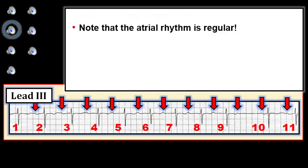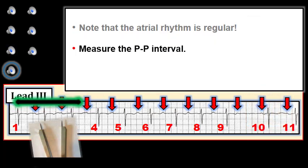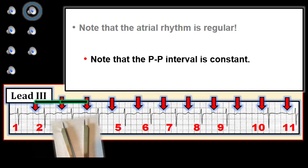Note that the P-to-P interval from one P wave to the next in this tracing is constant throughout. When there is time to do so, using calipers facilitates interpretation of any complex rhythm strip. There is no better or faster way to determine relationships between P waves and the QRS, and no better or faster way to determine if the rhythm is regular. Measure the P-to-P interval — ideally doing so with calipers. The P-to-P interval is constant for all beats on this tracing, which confirms that the atrial rhythm is regular.